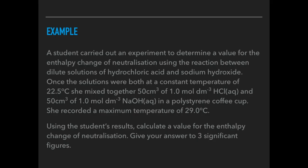So here's a worked example now with some values in. Let's suppose a student carried out this experiment. Once the solutions were both a constant temperature of 22.5°C, she mixes them together. I've gone for the same quantities as in the plan. She mixes them into a polystyrene cup and records at the end of the experiment the maximum temperature rise of 29°C. Use the student's results to calculate a value for the enthalpy change of neutralisation. Give your answer to three significant figures. If you want to have a go, pause the video and then play on for the answer.